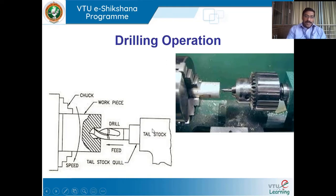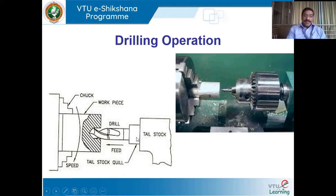In a drilling machine, the job is stationary and the drill bit is rotating, and the drill bit is also given a linear movement — that is the real difference. In actual drilling operation on a drilling machine, the workpiece is held in a work holding device like a vice, and the drill bit is fed against the stationary job. The drill bit is rotating as well as moving in a linear direction to accomplish the feed, producing a hole with diameter equal to — or slightly larger than — the diameter of the drill bit.